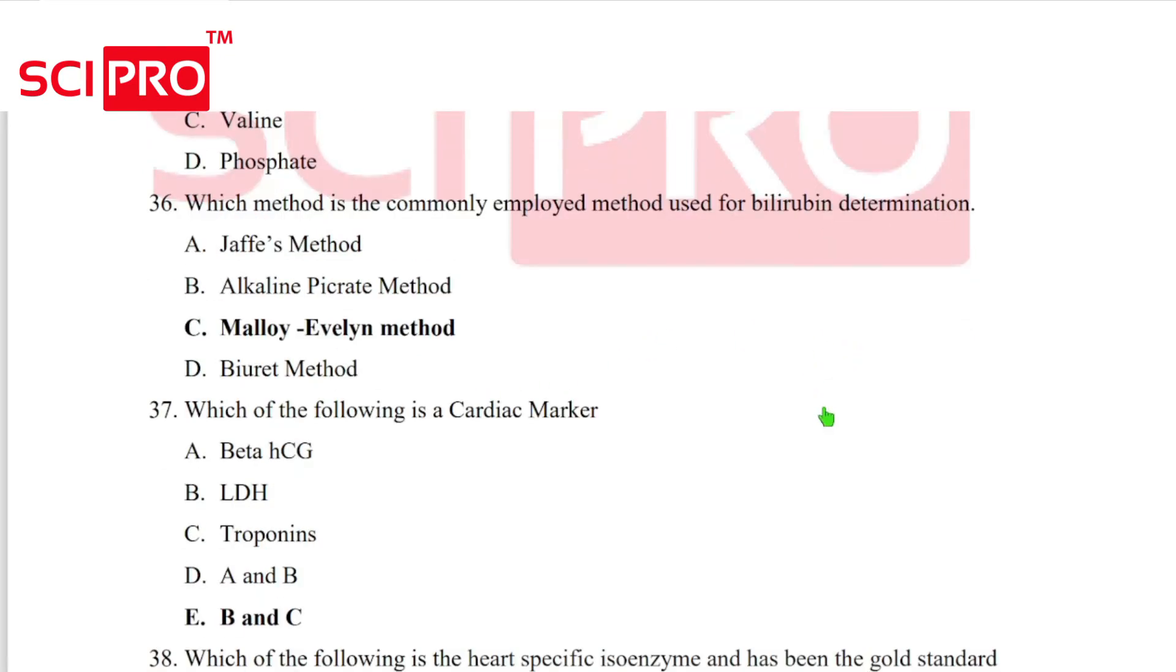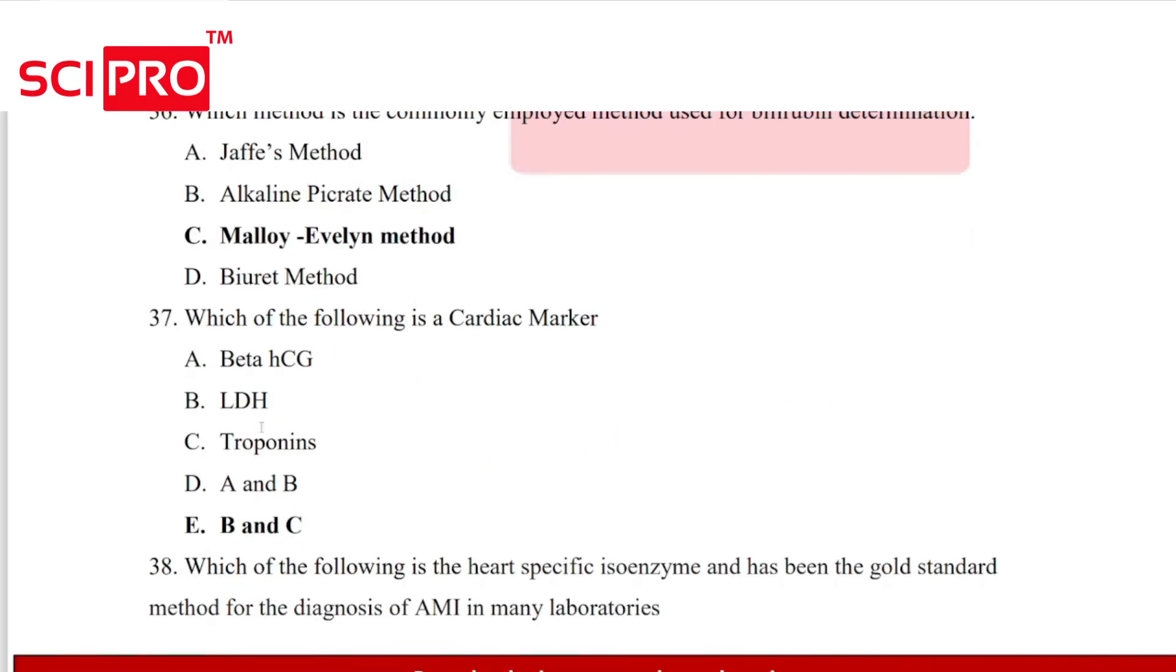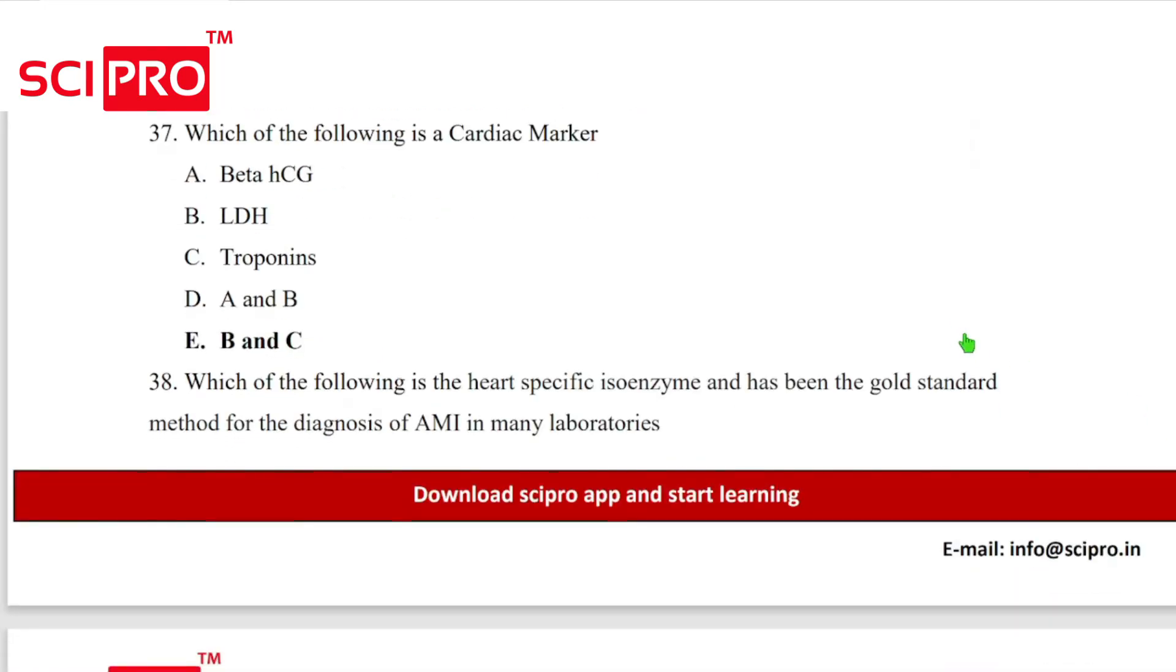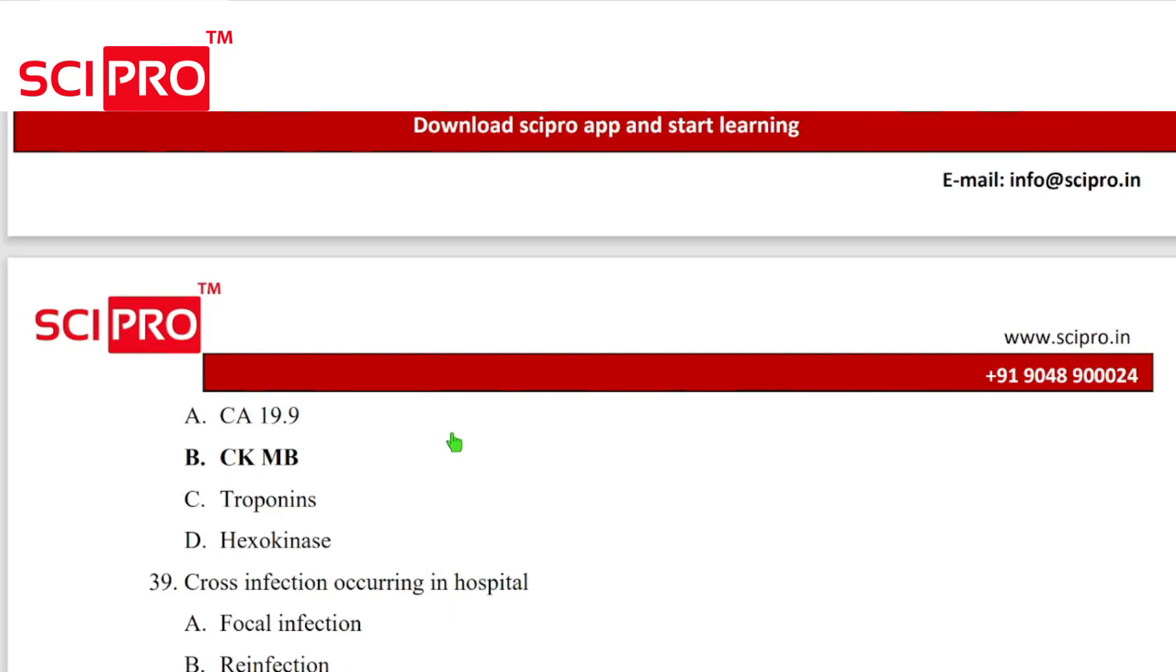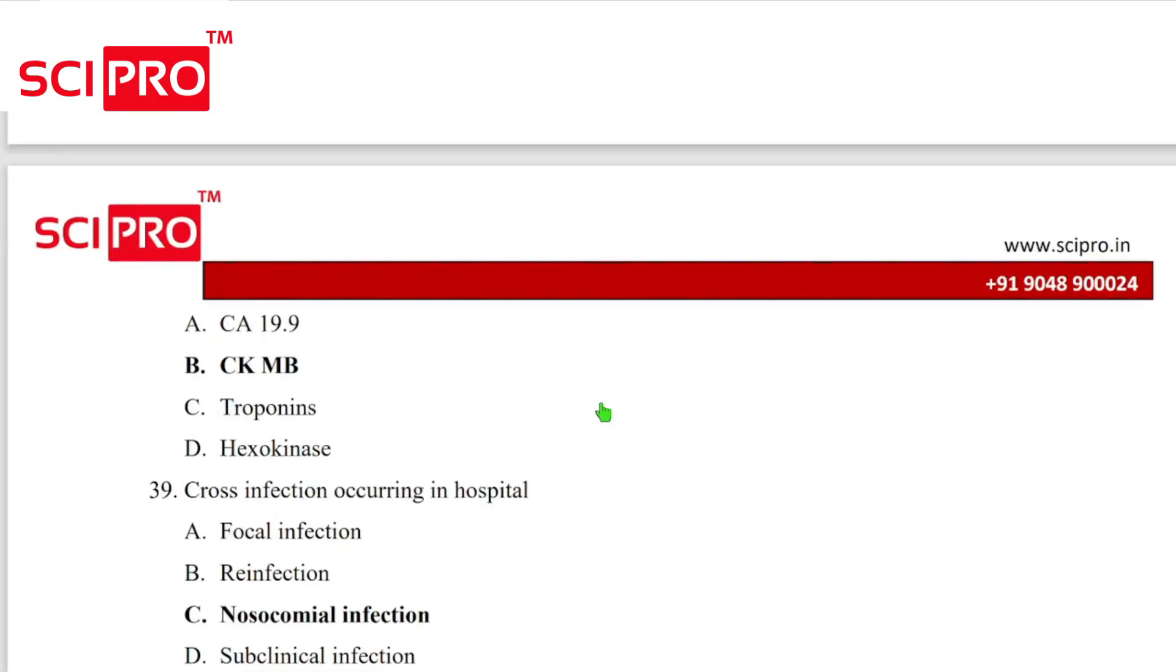Question number 37, which of the following is a cardiac marker? Answer, LDH and troponin. Question number 38, which of the following is a heart-specific isoenzyme and has been the gold standard method for the diagnosis of AMI in many laboratories? Answer CK-MB.